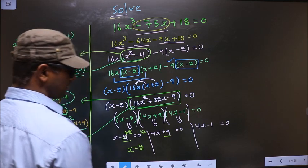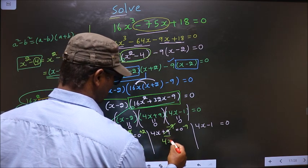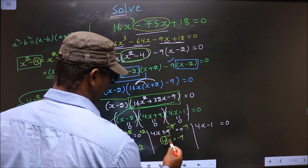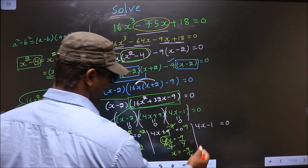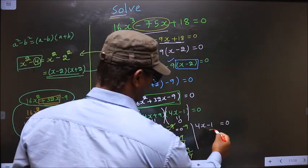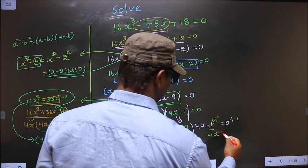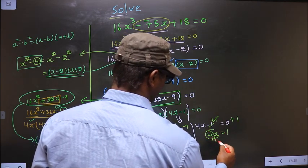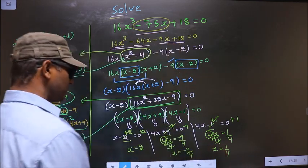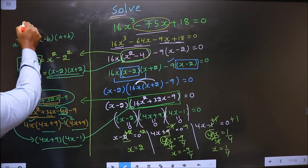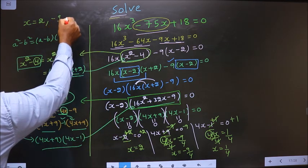For 4x plus 9 equal to 0, first subtract 9 from both sides so 4x equals negative 9, then divide by 4 to get x equal to minus 9 by 4. For 4x minus 1 equal to 0, add 1 to both sides to get 4x equal to 1, then divide by 4 to get x equal to 1 by 4. So the values we got for x are 2, minus 9 by 4, and 1 by 4.